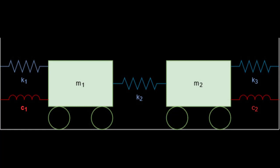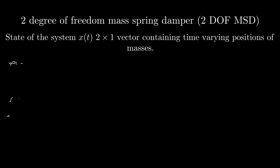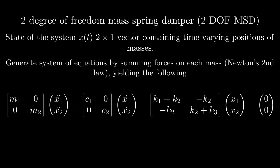Consider the example of the 2-degree-of-freedom mass-spring damper, where we have two masses, three springs, and two dampers. We can sum forces on each mass to generate the system of equations. For a state vector x(t) 2 by 1 containing the varying positions of the masses, we get the following matrix equation.